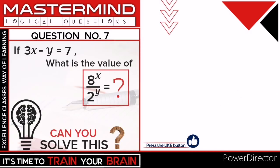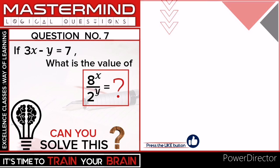Hello students! Today we have a simple but interesting question for all of you. If 3x minus y is equal to 7, what is the value of 8 raised to x upon 2 raised to y?